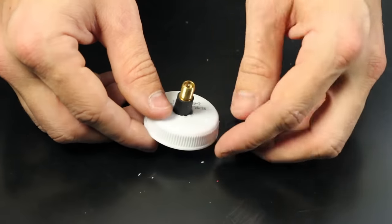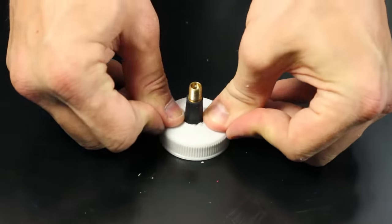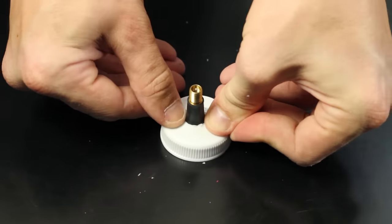Then slide the tire valve through the hole in the cap. It needs to be difficult to get the tire valve in place, or there won't be an airtight seal.